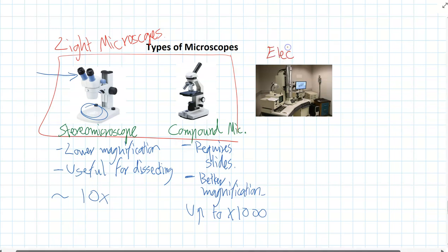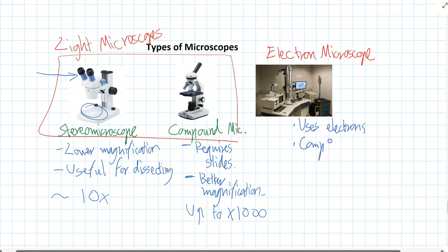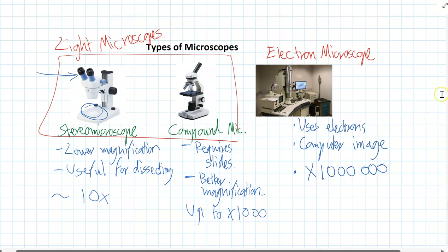Electron microscopes are a whole different ballgame because they're not using light to pass through the sample and you're not actually looking at the sample directly with your eyes. This microscope fires electrons at the sample and then detects those electrons using sensors. It puts the image up on a computer screen — so it uses electrons and creates a computer image. Because it uses electrons, it can produce much finer detail and can zoom much further in compared to any of the light microscopes. The best electron microscopes are getting upwards of a million times or more — we can almost start to see individual atoms.